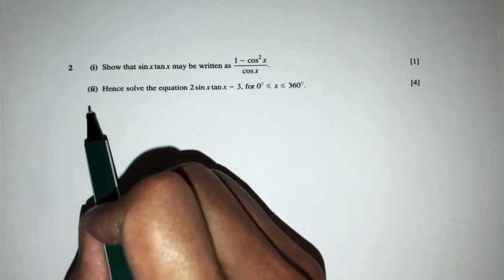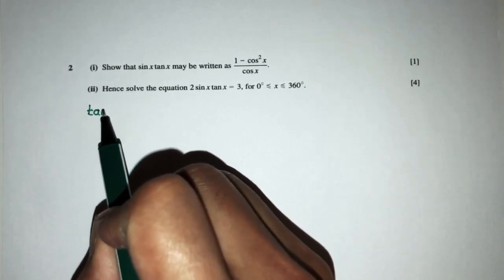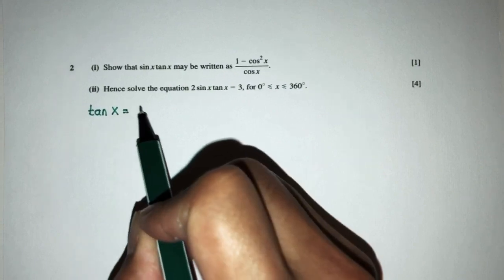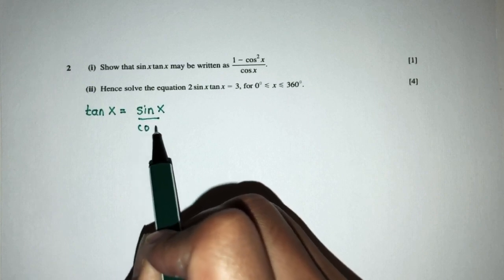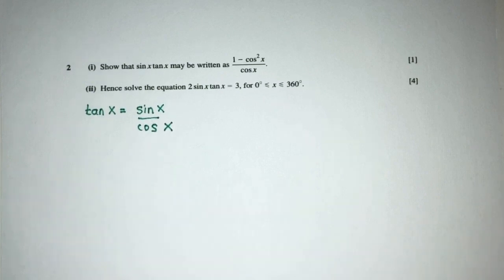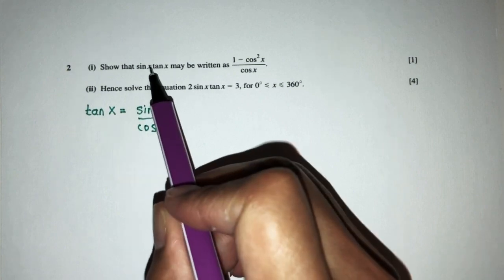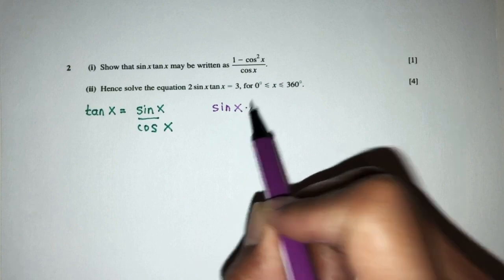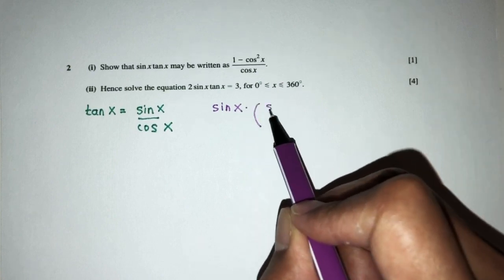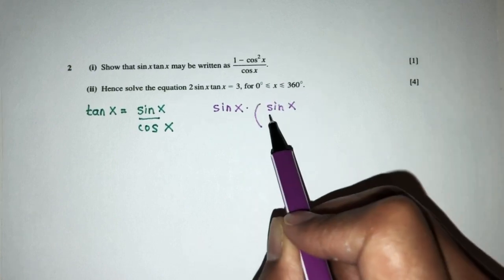So we know that tan x is what? Tan x is equal to sine x over cos x. Okay, so now we can use that to see what can we do. So replace this back in the main equation. So here we have sine x times tan x. Now we know tan x is also equal to sine x over cos x.